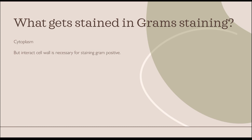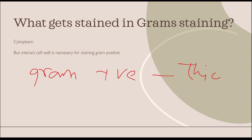As you all know the difference for gram positive and gram negative: gram positive has a thick layer and gram negative has a thin layer of peptidoglycan in their cell wall.